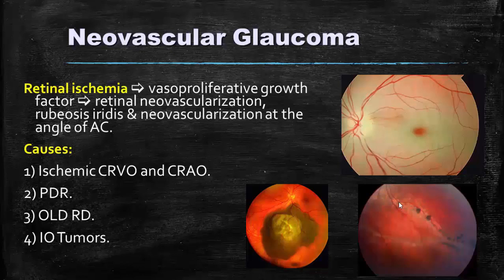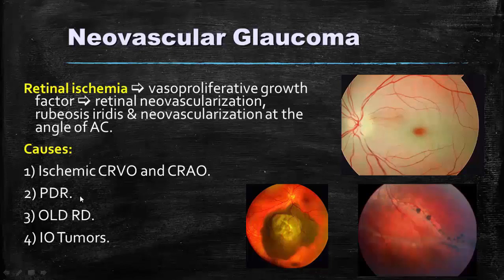Neovascular glaucoma: the main pathology is retinal ischemia, which leads to production of vasoproliferative growth factor (VEGF), leading to retinal neovascularization and new vessel formation at the iris, called rubeosis iridis, and neovascularization at the angle of the anterior chamber. The causes of retinal ischemia include ischemic central retinal vein and central retinal artery occlusion, proliferative diabetic retinopathy especially when new vessels are formed, long-standing retinal detachment with retinal ischemia, and intraocular tumors.